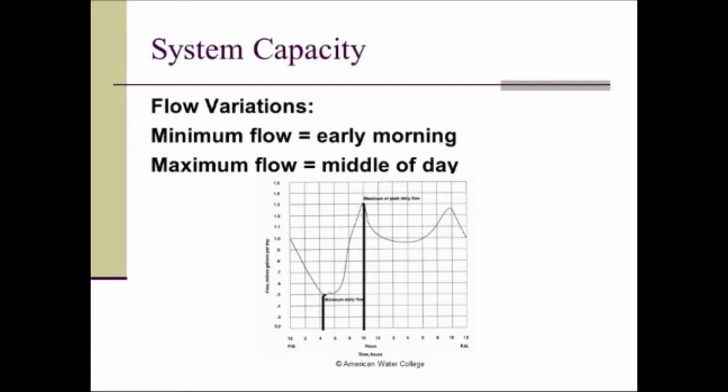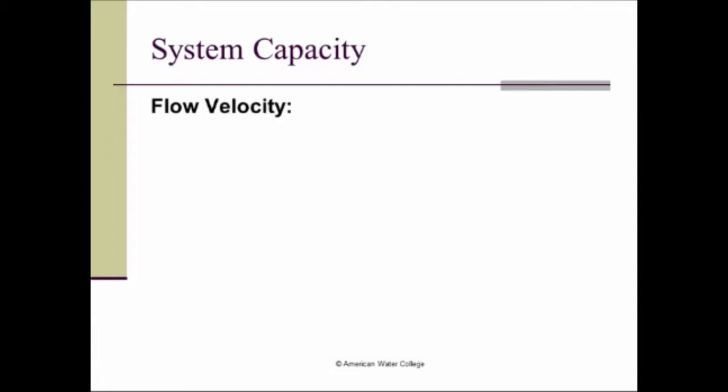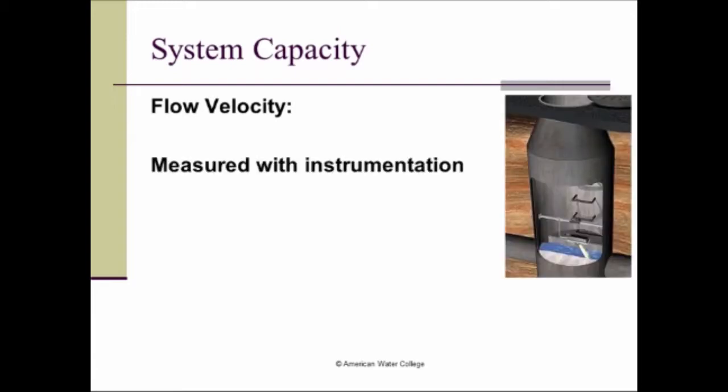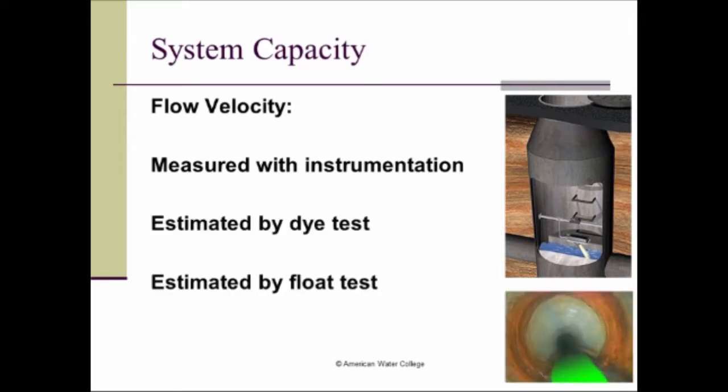Well, how do we measure the system capacity? Well, one measurement is flow velocity. Again, I'm going to keep saying two feet per second, but we want to have the minimum scouring velocity to carry the solids and the organic matter to the treatment plant. But we can measure flow velocity with instrumentation that's installed, but we can also use a dye test or a float test. So these are three different ways that we can measure flow velocity in our system. And we'll take a look at each.